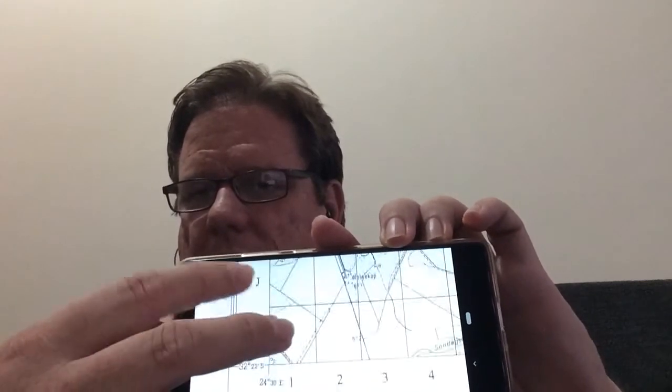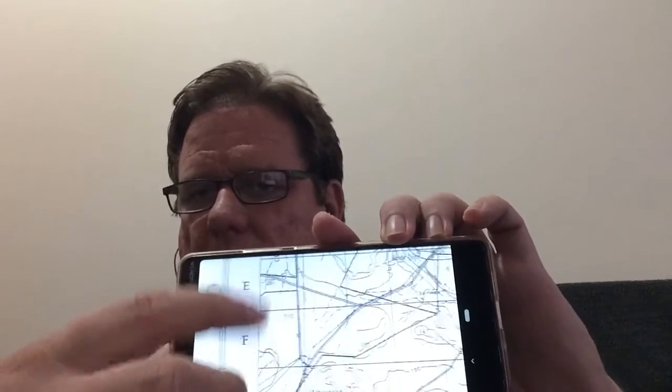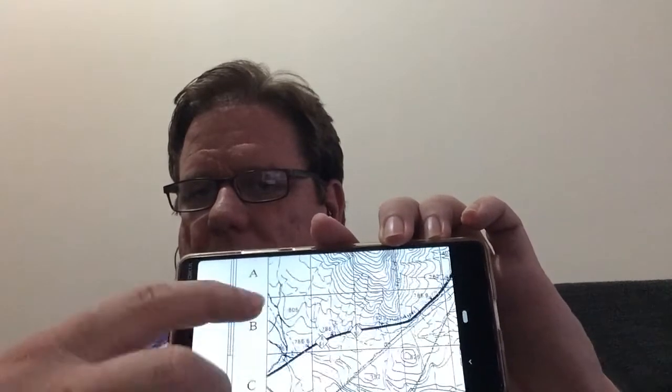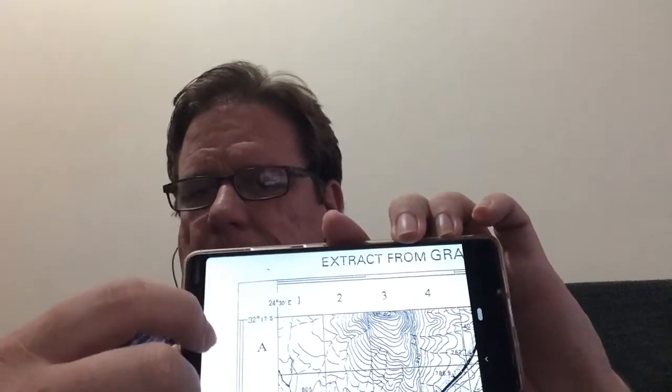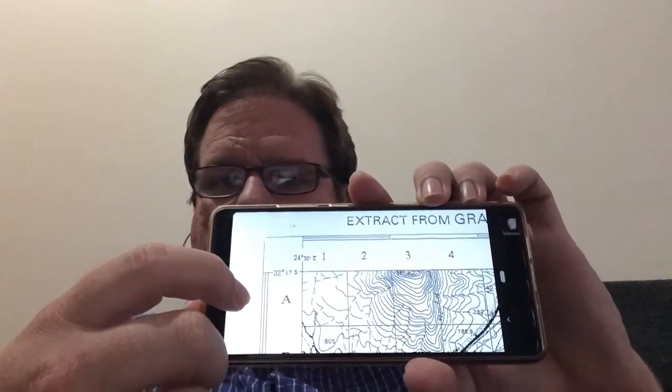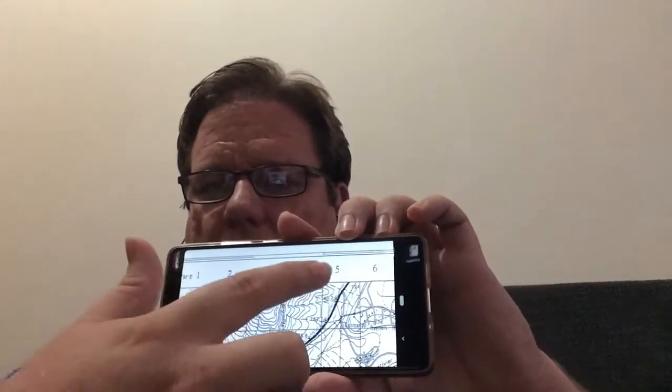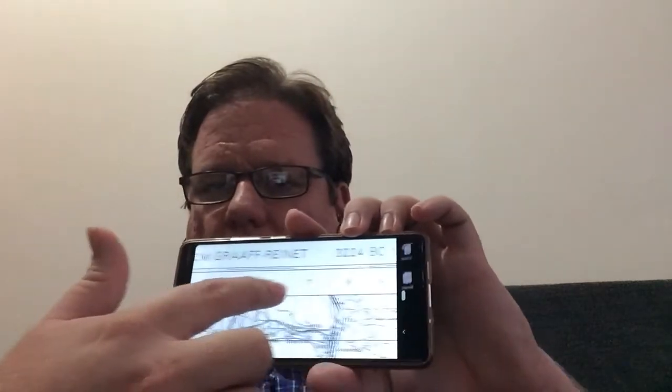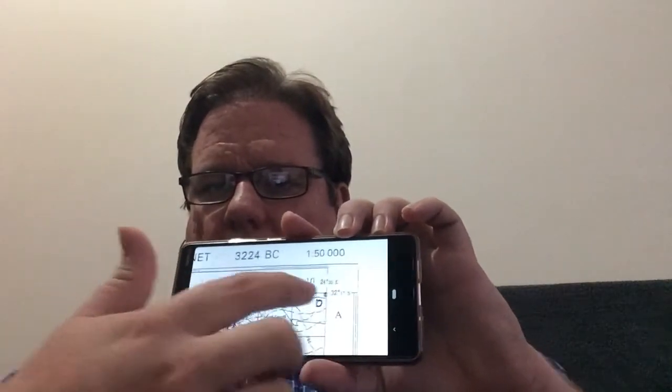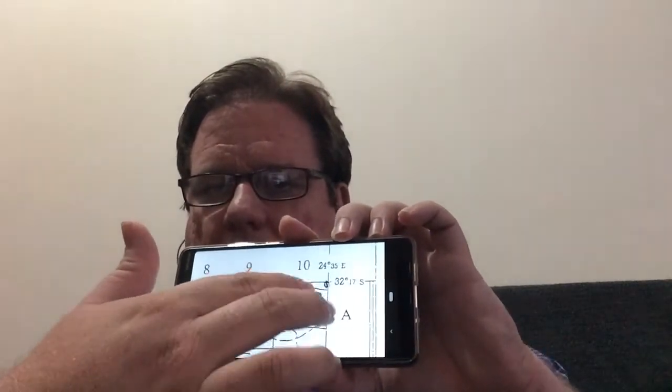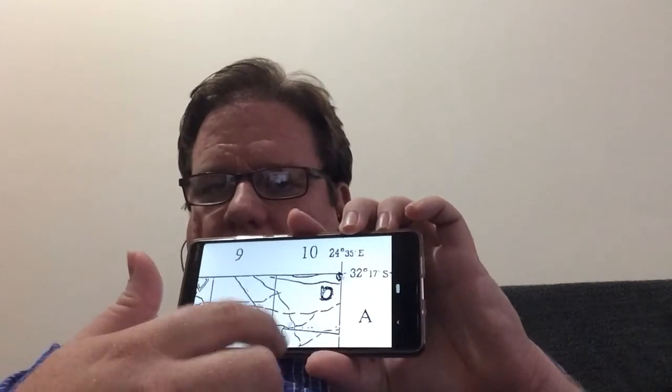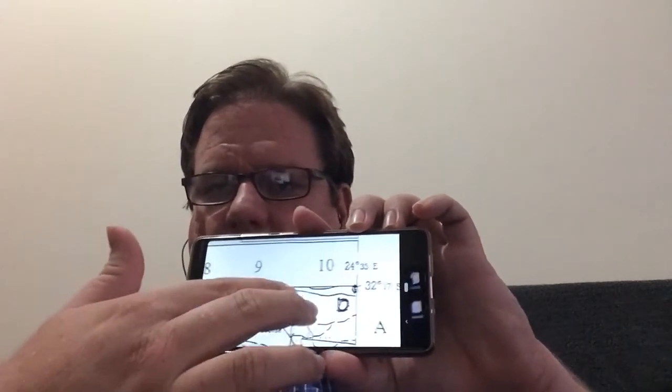and then the same is true for going across the map when we're talking about lines of longitude. It's 24 degrees 30, and then it would go 31, and 32, and 33, and 34, and then eventually end up at 35 degrees east.